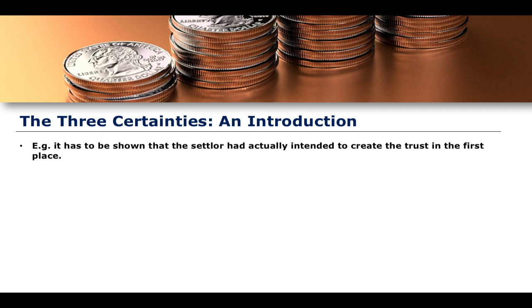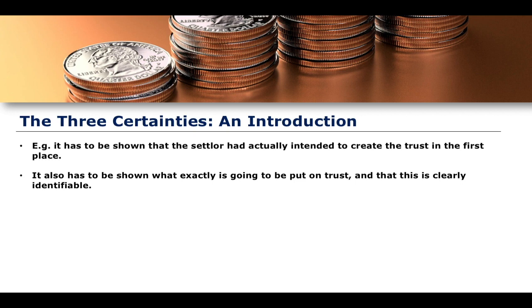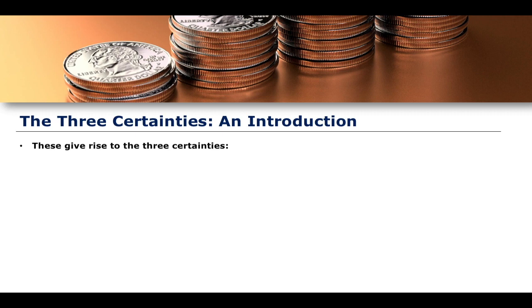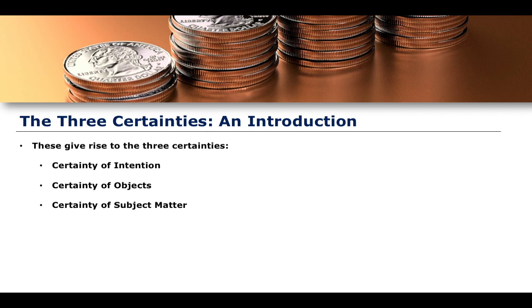It must be shown that the settler had actually intended to create a trust in the first place. It also has to be shown what exactly is going to be put on trust and that this is clearly identifiable. And finally, the settler has to be very clear in identifying who will be the beneficiary of the trust. These are essentially the three certainties: certainty of intention, certainty of objects, and certainty of subject matter.